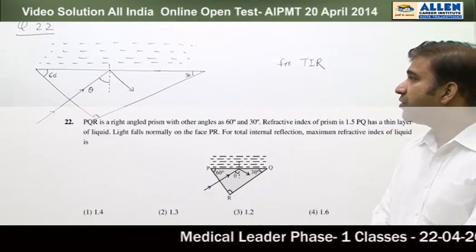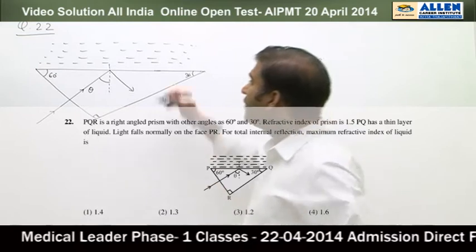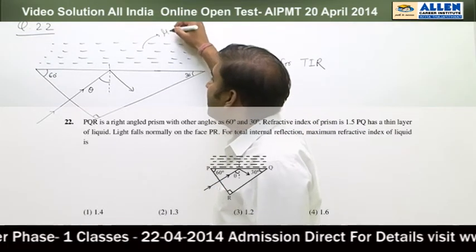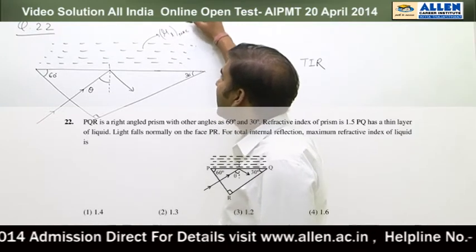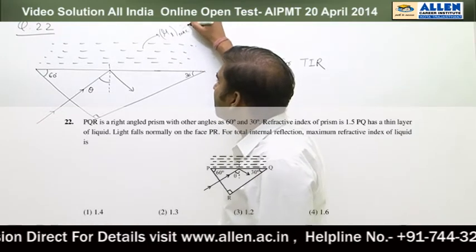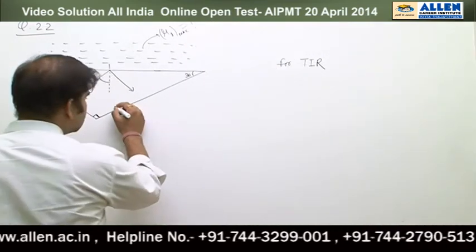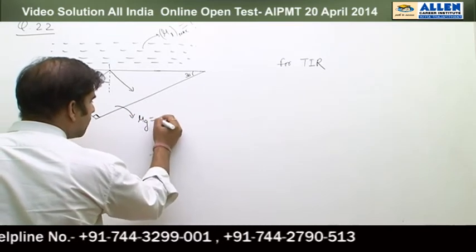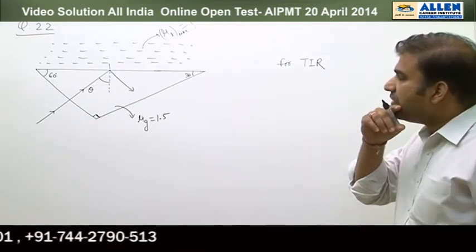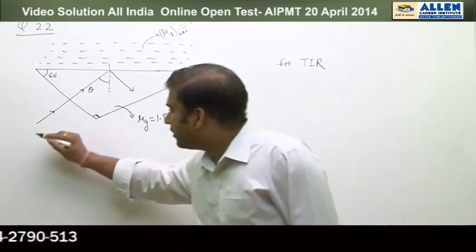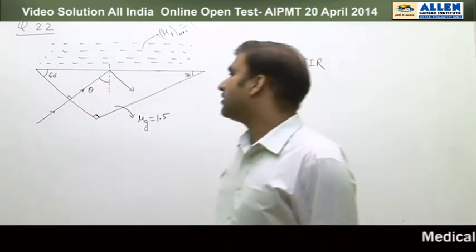In question number 22, corresponding to the given situation, we have to calculate the maximum refractive index of a liquid. The glass refractive index is 1.5. It is written that light is normally incident, so this angle must be 90 degrees.